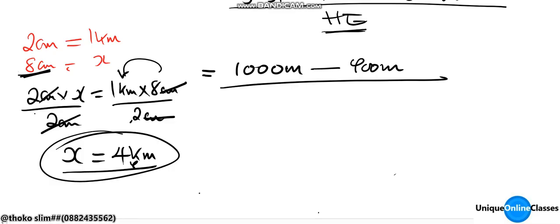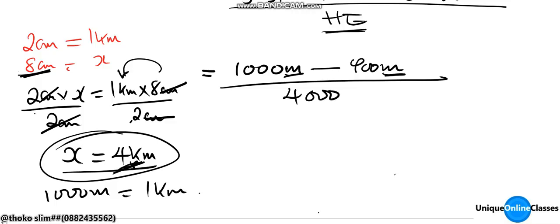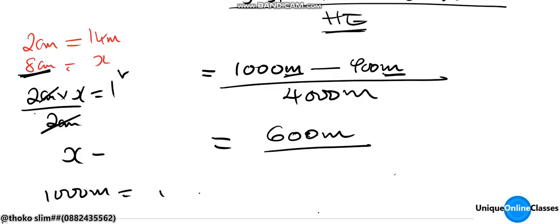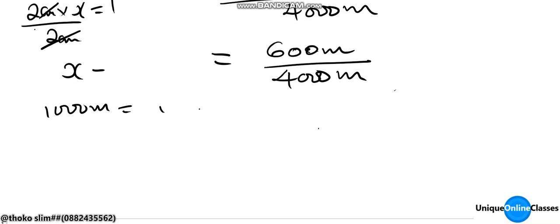Now we need to convert the horizontal equivalent into meters, since our vertical interval is also in meters. One kilometer equals 1000 meters, so 4 kilometers equals 4000 meters. So we now have: 600 meters divided by 4000 meters.